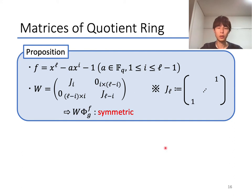Now, I show that actually there exists such a matrix W. This proposition shows that if f equals x^ℓ minus a·x^{i-1}, and W is an ℓ times ℓ matrix like this form, then for any g in the quotient ring, W·Φ_g^f is symmetric.